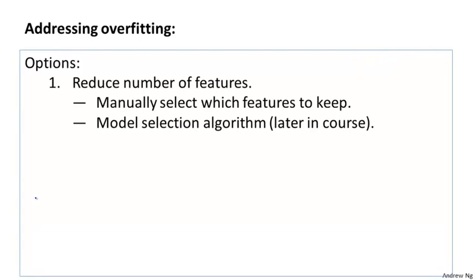In order to address overfitting, there are two main options for things that we can do. The first option is to try to reduce the number of features. Concretely, one thing we could do is manually look through the list of features and use that to try to decide which are the more important features, and therefore which are the features we should keep and which are the features we should throw out.